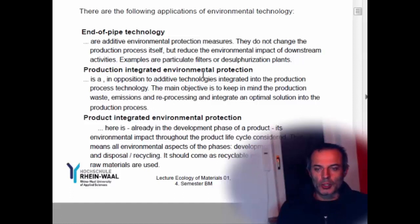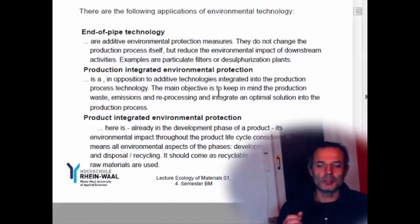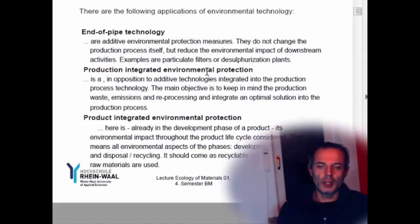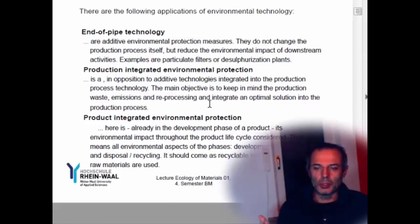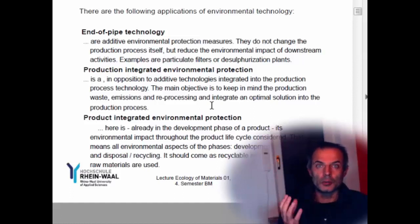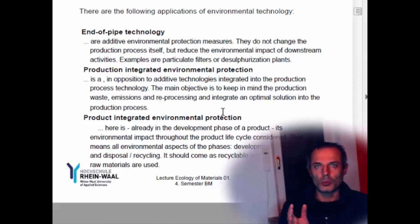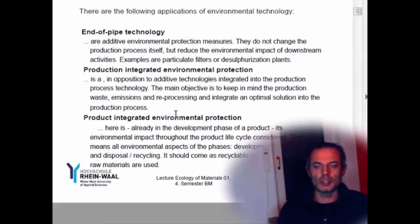Otherwise we could do production-integrated environmental protection, which is obviously the preferred version where we integrate it into the production to make less waste on the way. So that would be, for example, instead of using organic solvents in a factory, changing it for water wherever you can, so you don't create the waste in the first place.